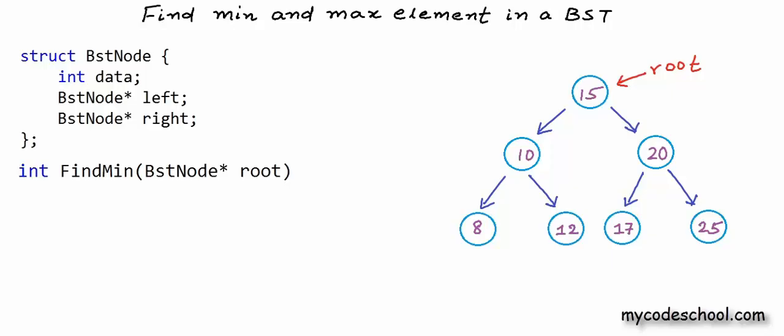Let's first see how we can find the minimum element. There are two possible approaches here. We can write an iterative solution in which we can use a simple loop to find the minimum element, or we can use recursion. Let's first see the iterative solution.